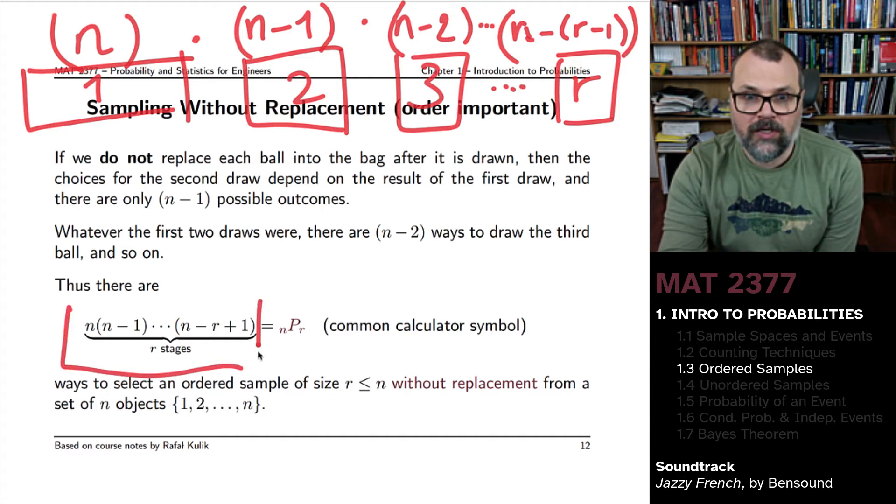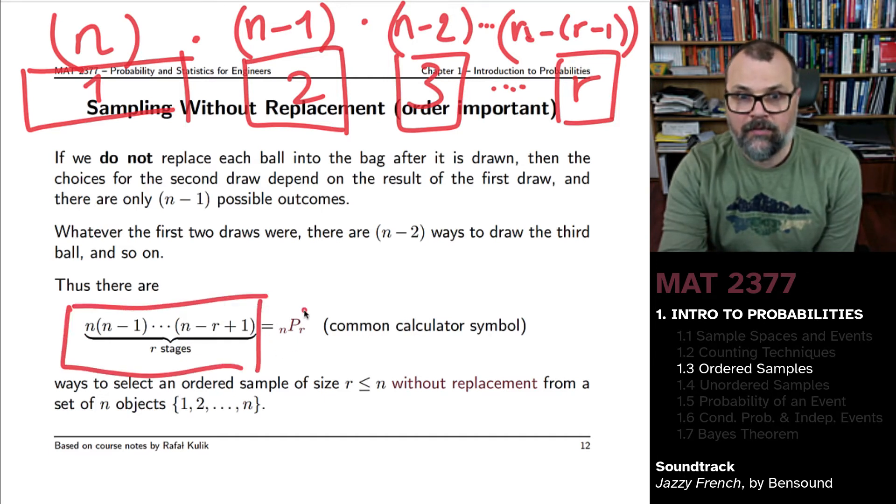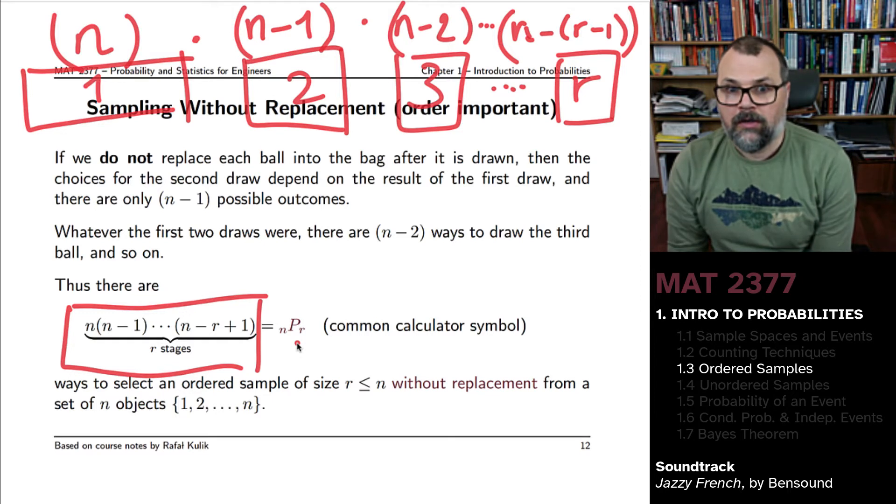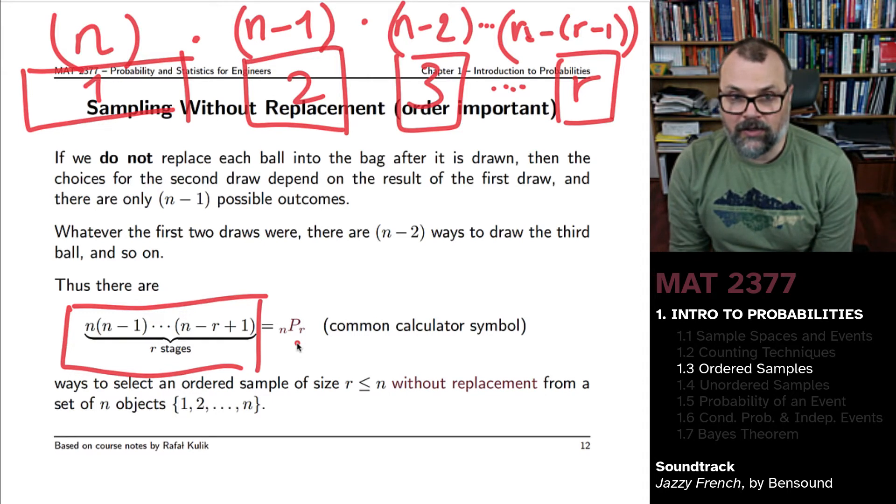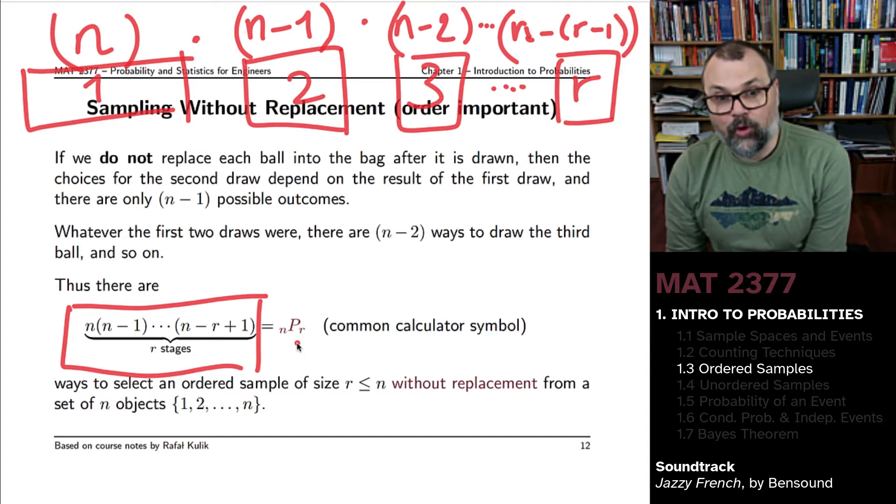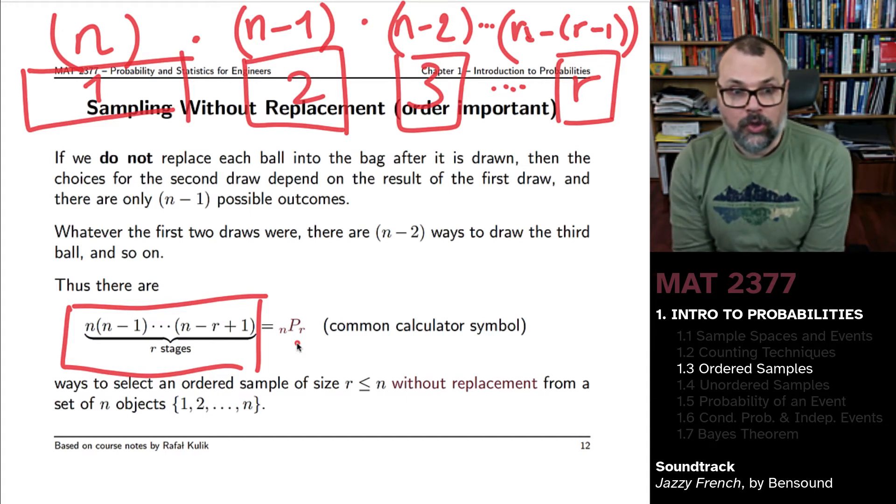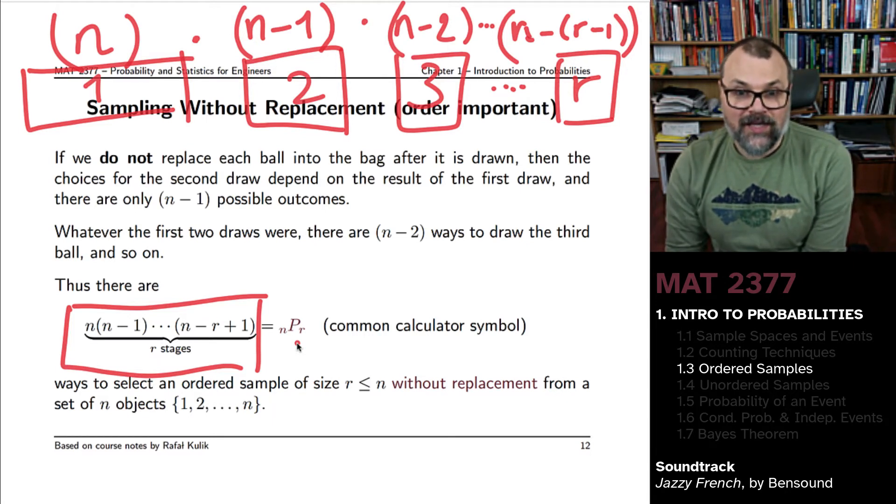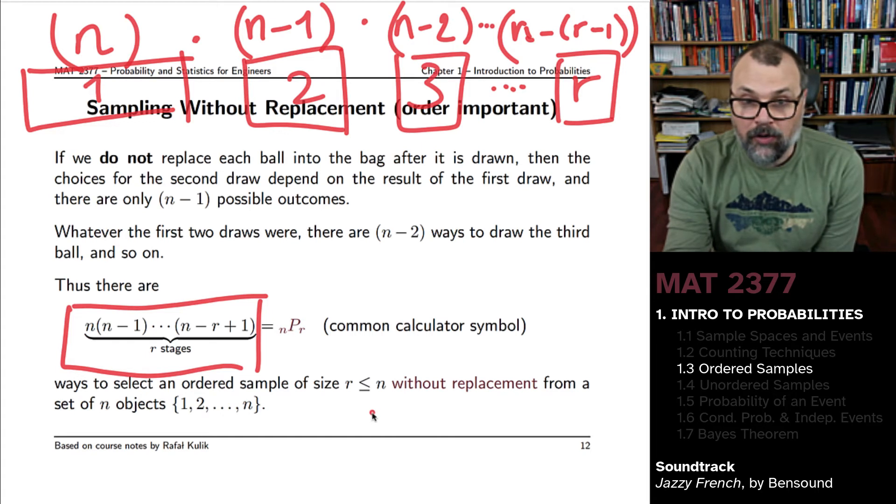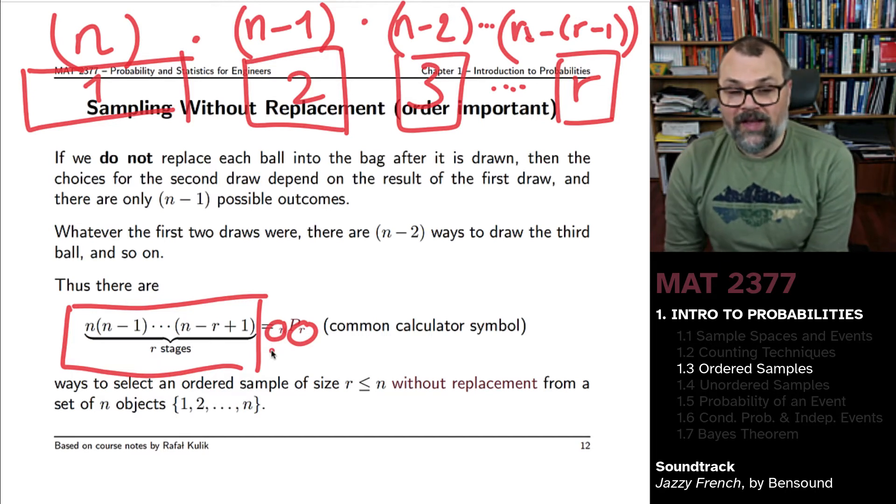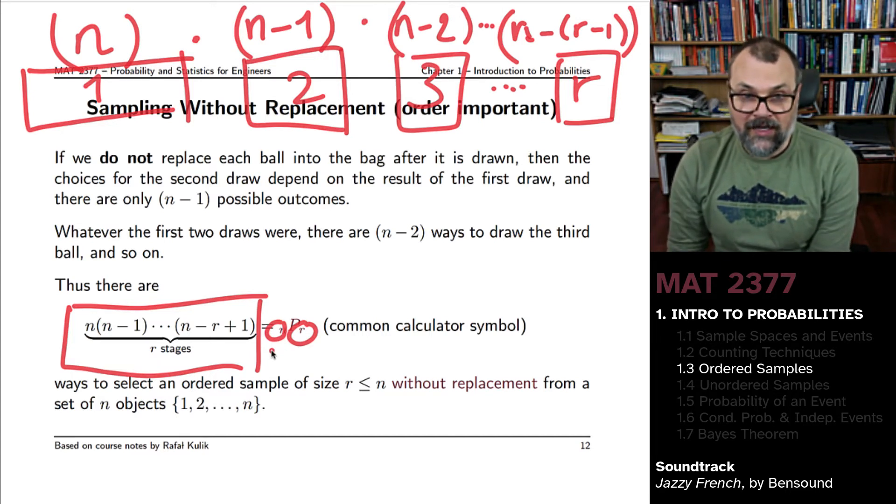Here we denote it by NPR. That's a calculator symbol that you'll see in most calculators. This P stands for permutation here. You're looking at ways to select an ordered sample of size R, where R has to be smaller than or equal to N. So this number here cannot be greater than the number right here, without replacement from a set of N objects.